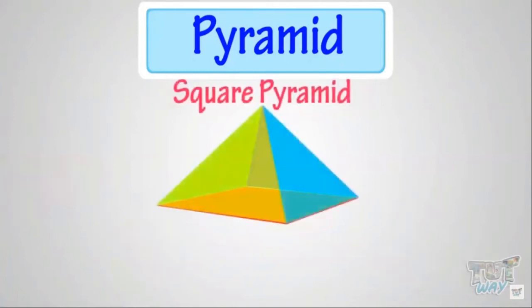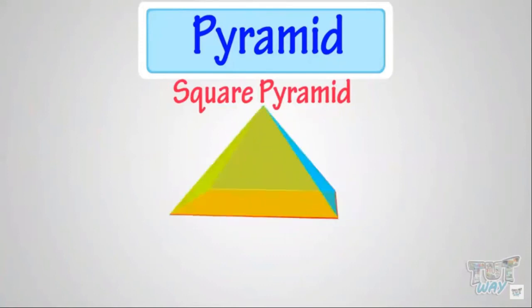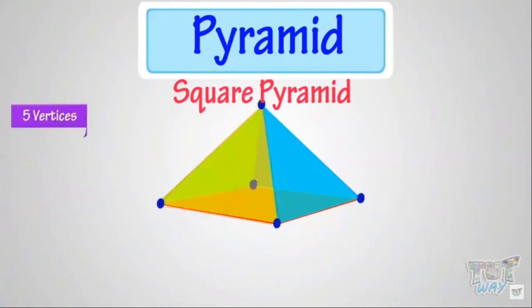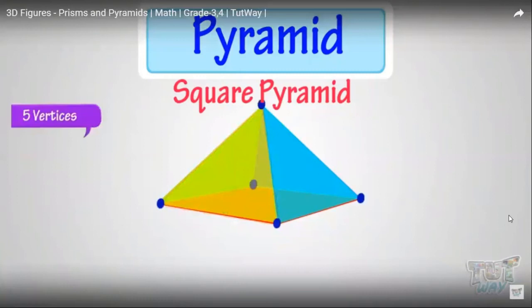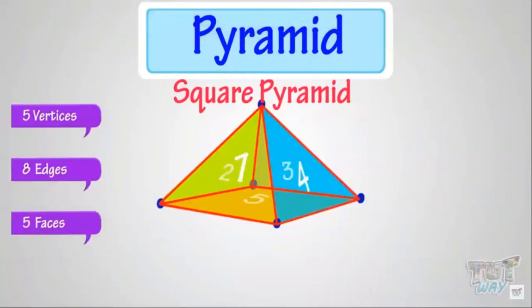This is a square pyramid because its base is a square and all other faces are triangular and converge to a single point. It has five vertices, eight edges, and five faces.